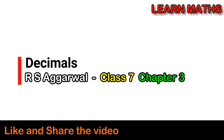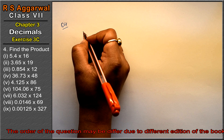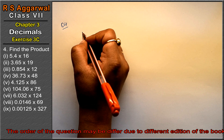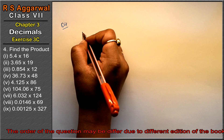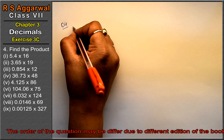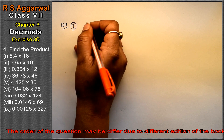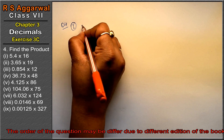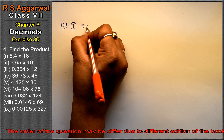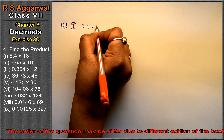Let's do question number 4 of exercise 3C, that is decimals. Question number 4 is: find the product. First part: multiply 5.4 into 16.